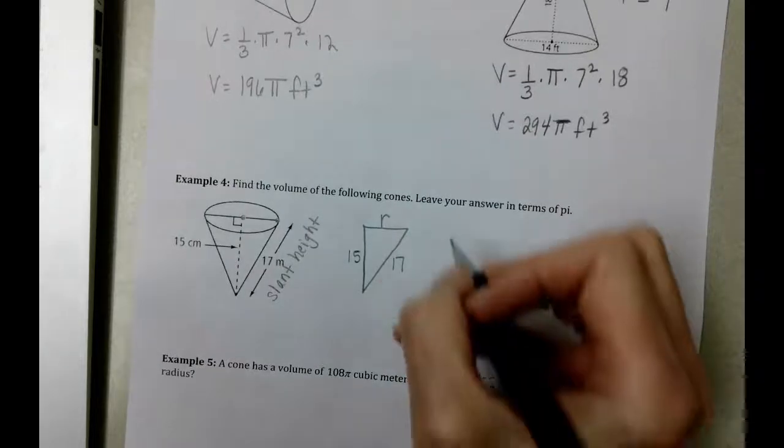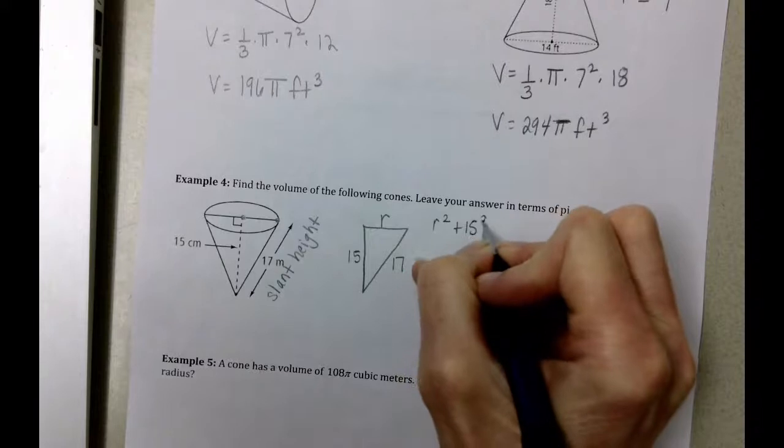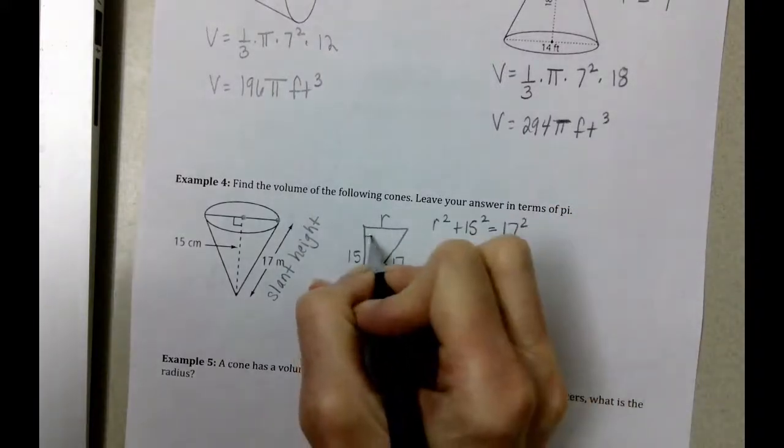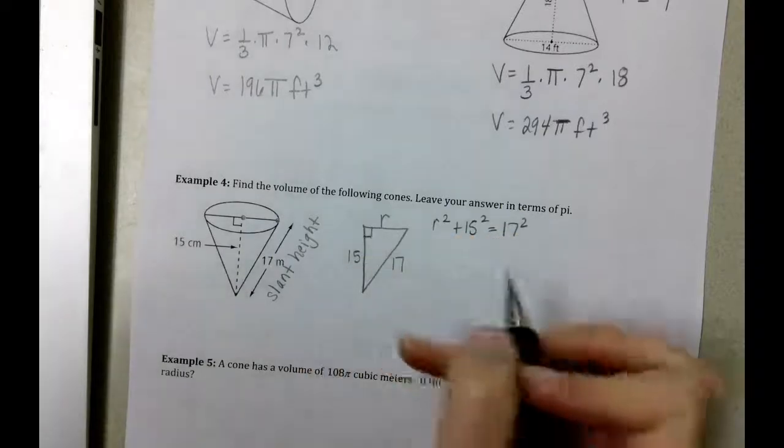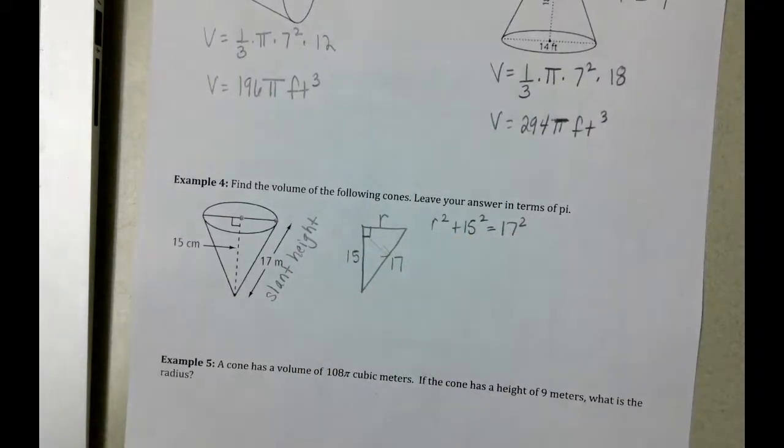Our Pythagorean theorem being r squared plus 15 squared equals 17 squared. I didn't put this in, but I should have put the right angle in to indicate that 17 is the hypotenuse. It's across from the right angle.